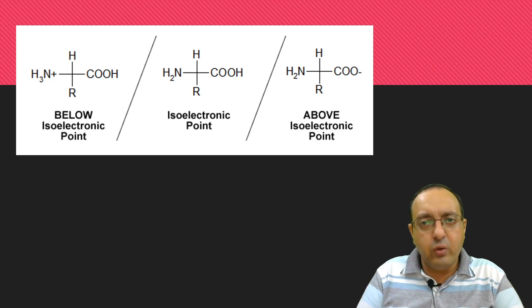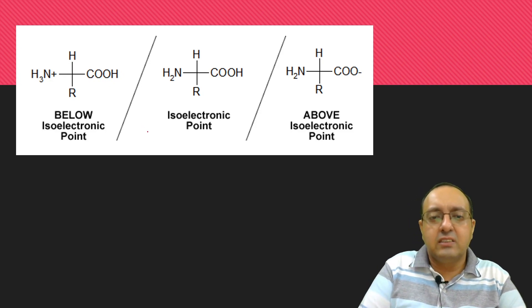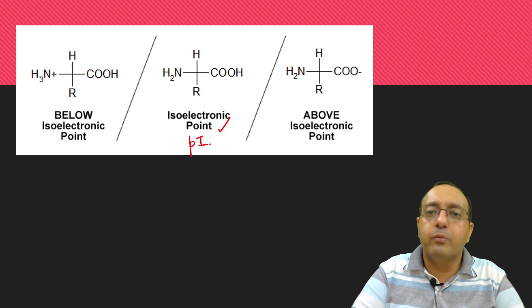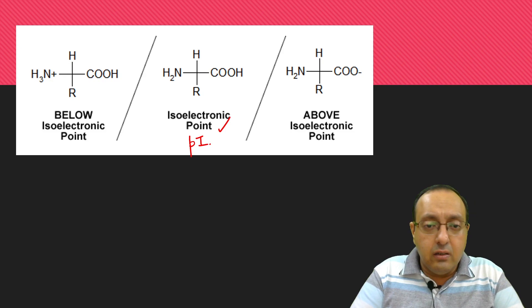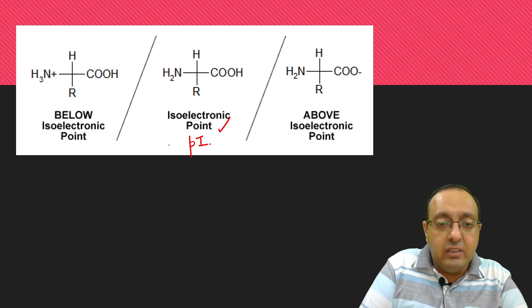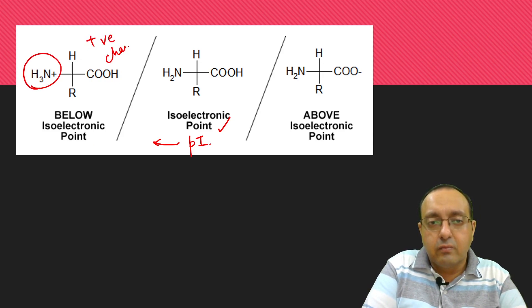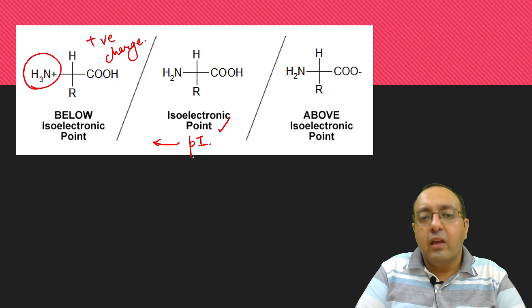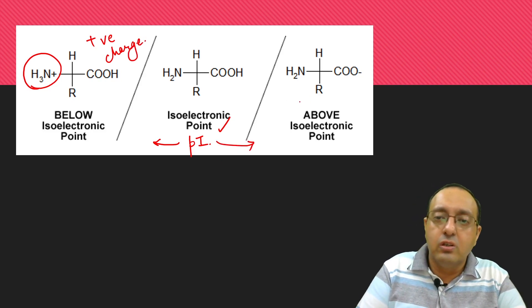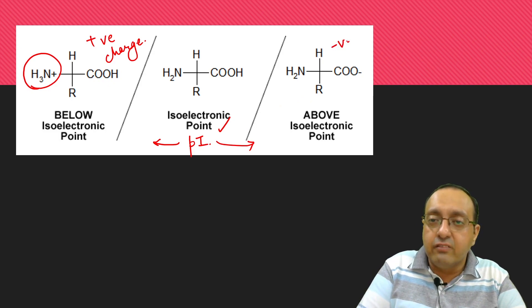A protein in a particular pH environment has either a positive charge or a negative charge or it has no charge. The point where it has no charge has a specific term which is called pI or isoelectric point. Below the isoelectric point, if we decrease the pH, it will have a net positive charge.